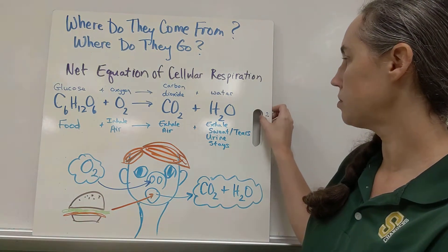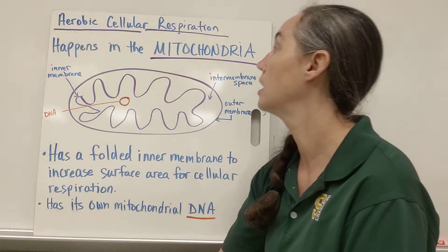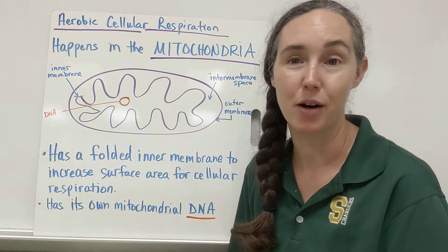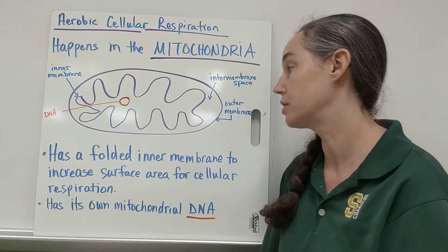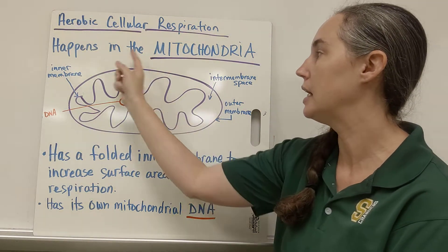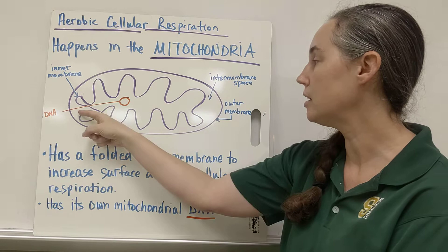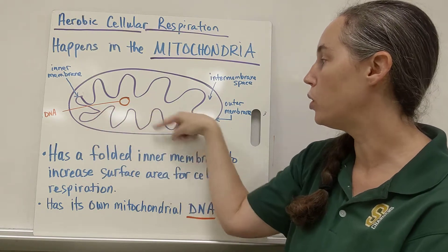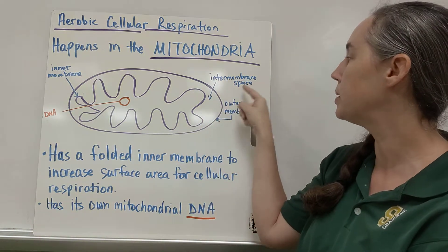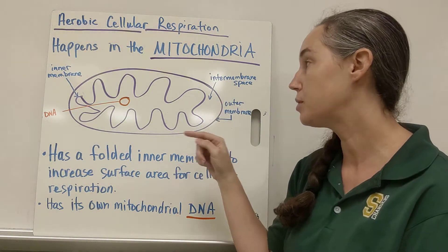Aerobic cellular respiration happens in the mitochondria of eukaryotic cells. The structure of the mitochondria is it has an outer membrane, an inner folded membrane, and then in between those two membranes is called the inter-membrane space.